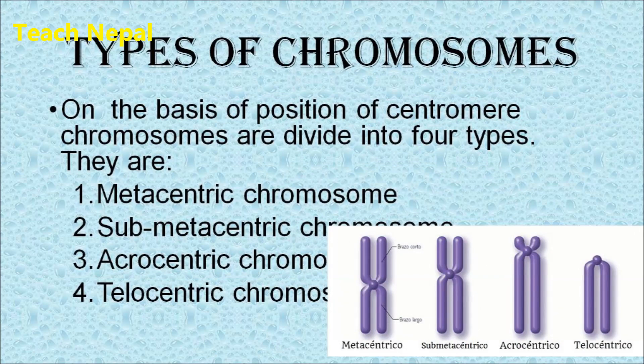Now we move to the types of chromosomes. On the basis of the position of the centromere, chromosomes are of four types: metacentric, sub-metacentric, acrocentric, and telocentric chromosomes.